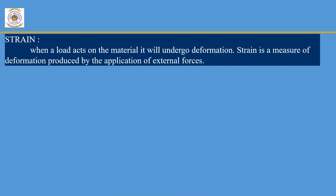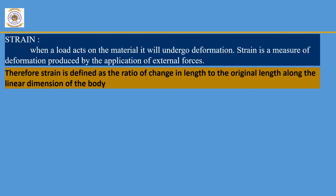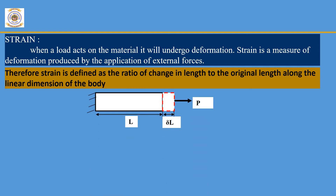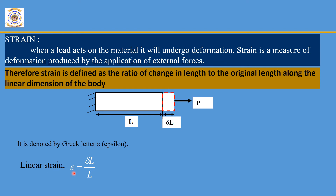When a body is subjected to an external force it undergoes deformation. Strain is the measure of deformation produced due to application of external forces, and is defined as the ratio of change in length to original length. Consider a cantilever beam subjected to a tangential force P; due to this force, the original length L changes by delta L, which represents the increase in length. Strain, denoted by Greek letter epsilon, equals delta L divided by L.